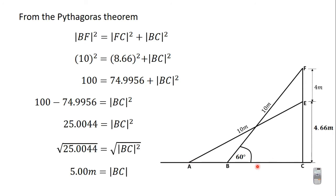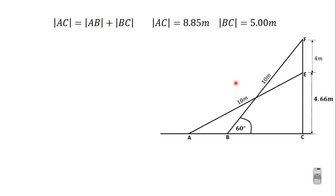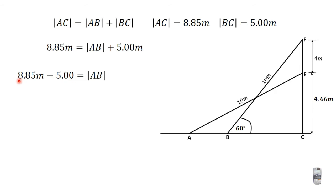We now have AC and BC. From the diagram, AC = AB + BC. So 8.85 meters = AB + 5.00 meters. Therefore AB = 8.85 meters − 5.00 meters = 3.85 meters.